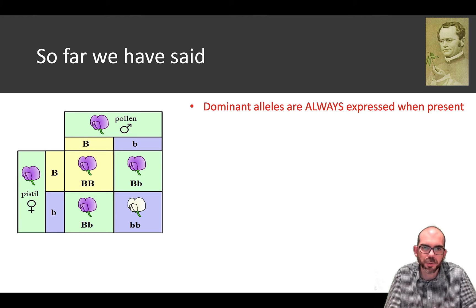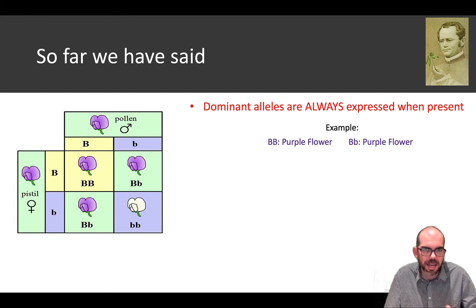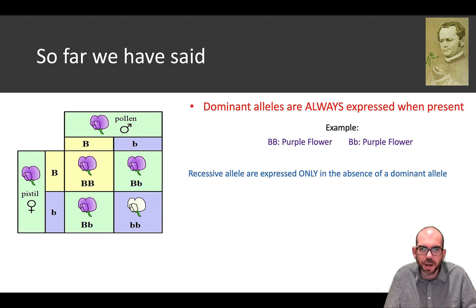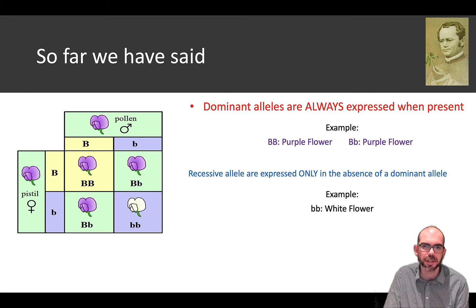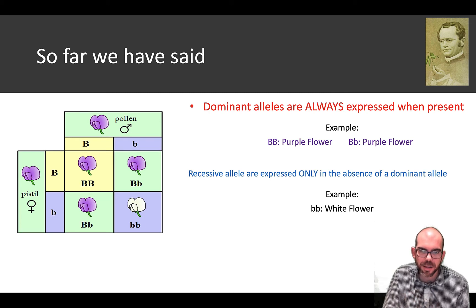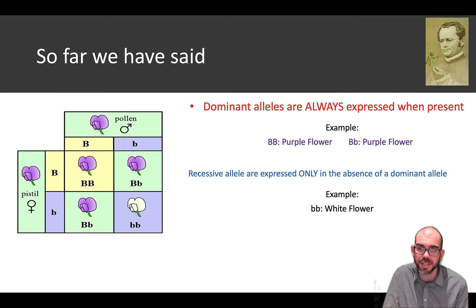Looking at the cross here between two purple plants, you can see that any of the offspring that have a dominant allele — a big B in this case — is purple. We also learned that a recessive allele is expressed only in the absence of the dominant allele. In this example, the white flower is white because there are no dominant alleles preventing that white recessive allele from being expressed.